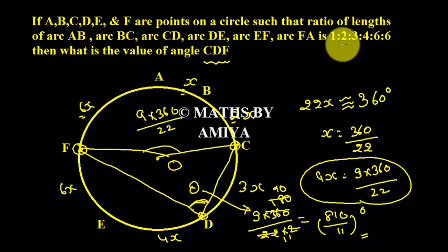Whenever we have ratio of the arc, we can create the complete circle and the complete arc is nothing but perimeter, and the complete perimeter is 360 degrees at center. By this we find what is 9x: 9x is 9 into 360 upon 22. So perimeter angle by C and F is nothing but 810 upon 11 degrees, and this is our answer.